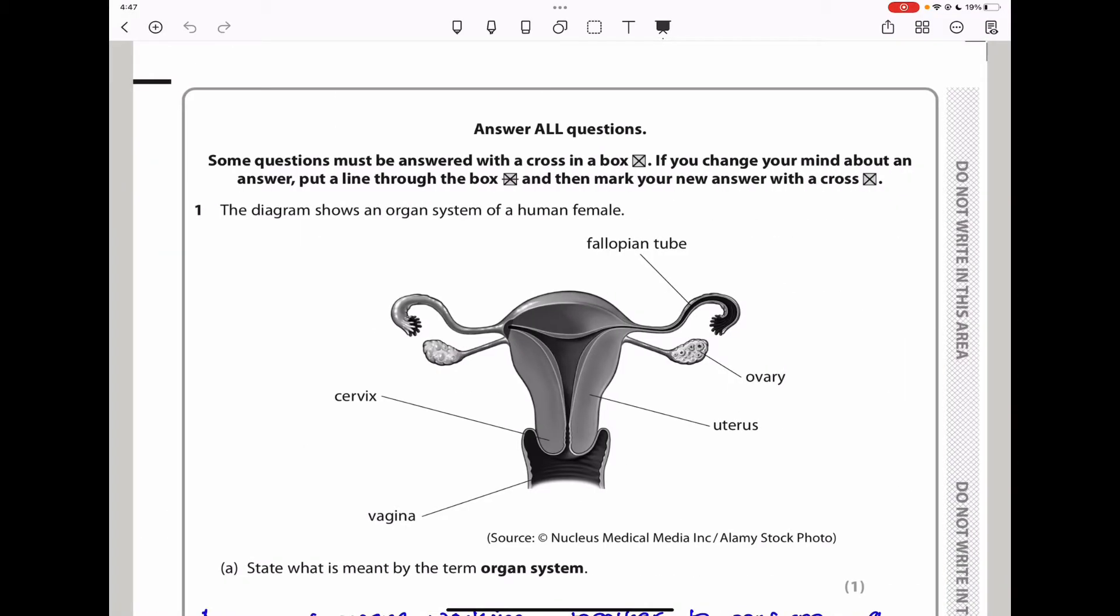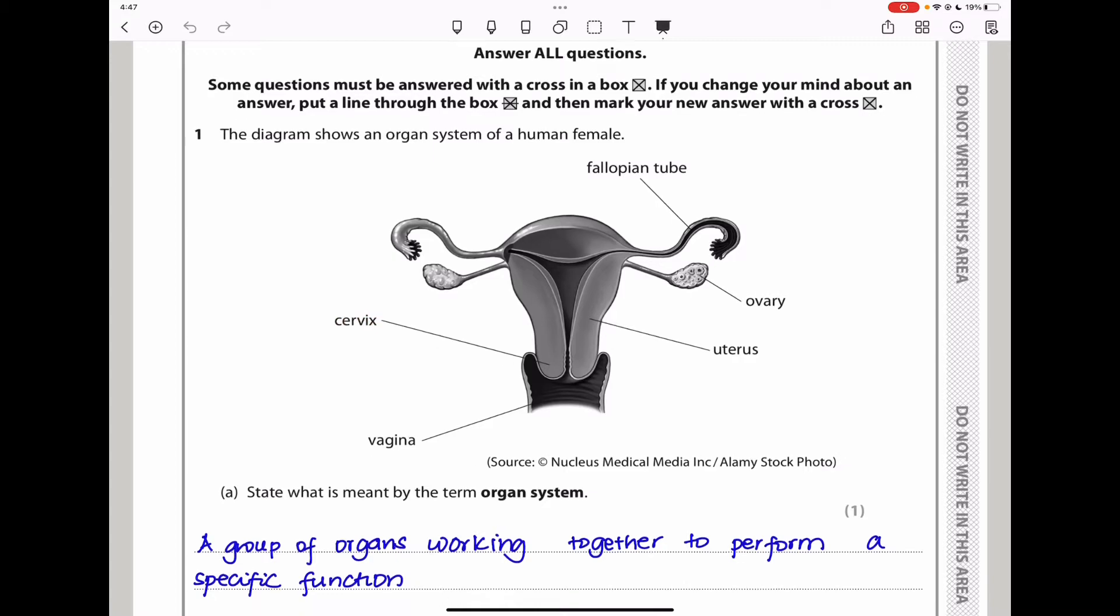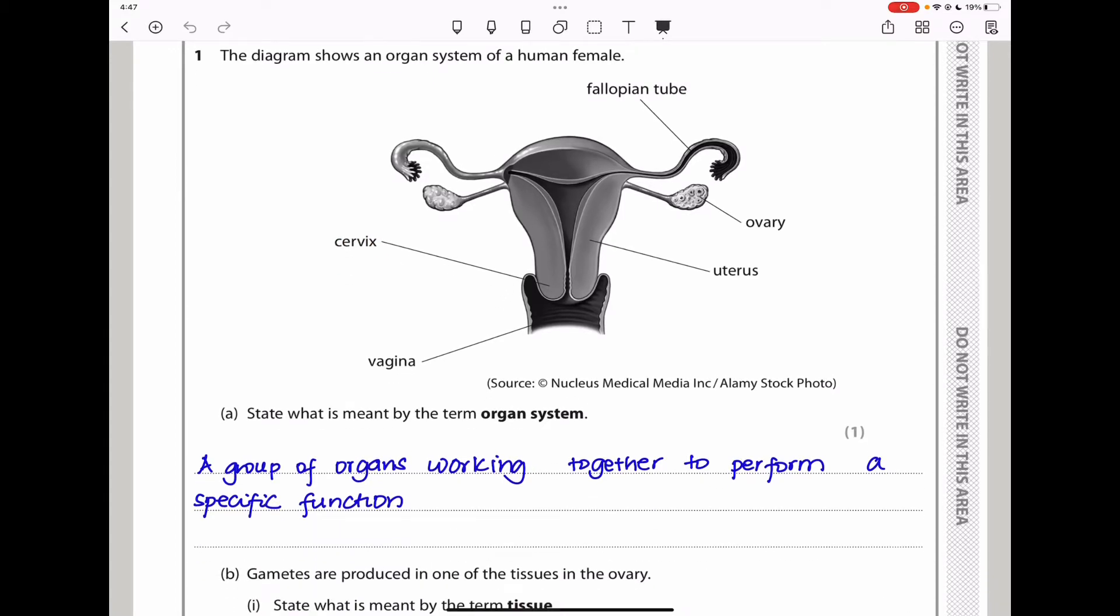Let's begin with question 1. The diagram shows an organ system of a female. This is part of the female reproductive system. We can see the fallopian tube, the ovary, the uterus, the vagina, and the cervix. They ask: state what is meant by the term organ system. An organ system is a group of organs working together to perform a specific function.